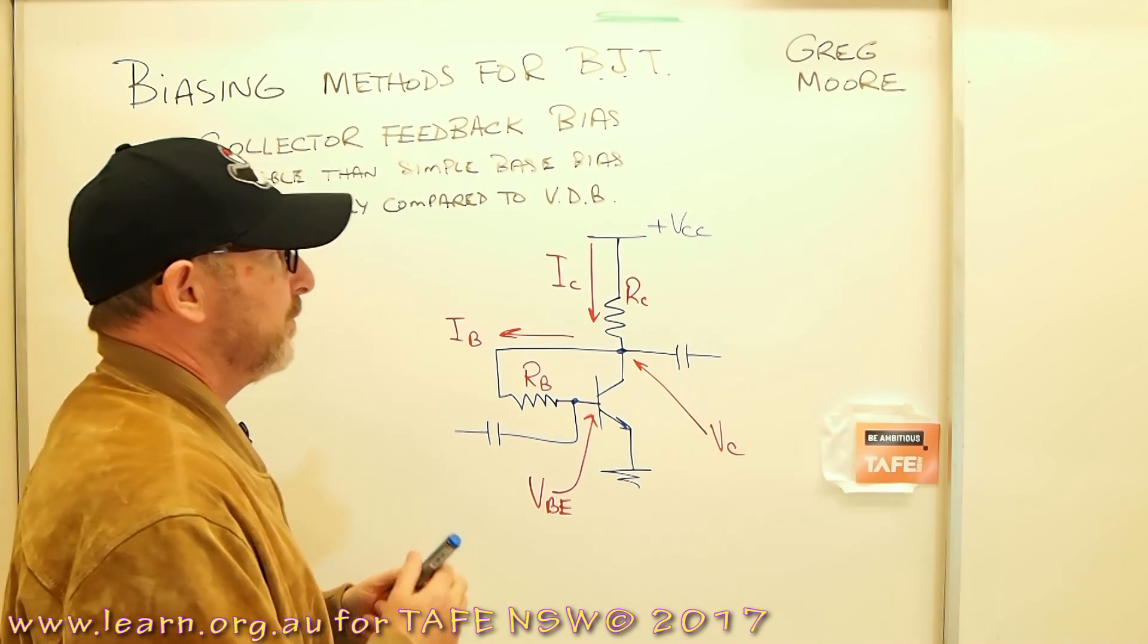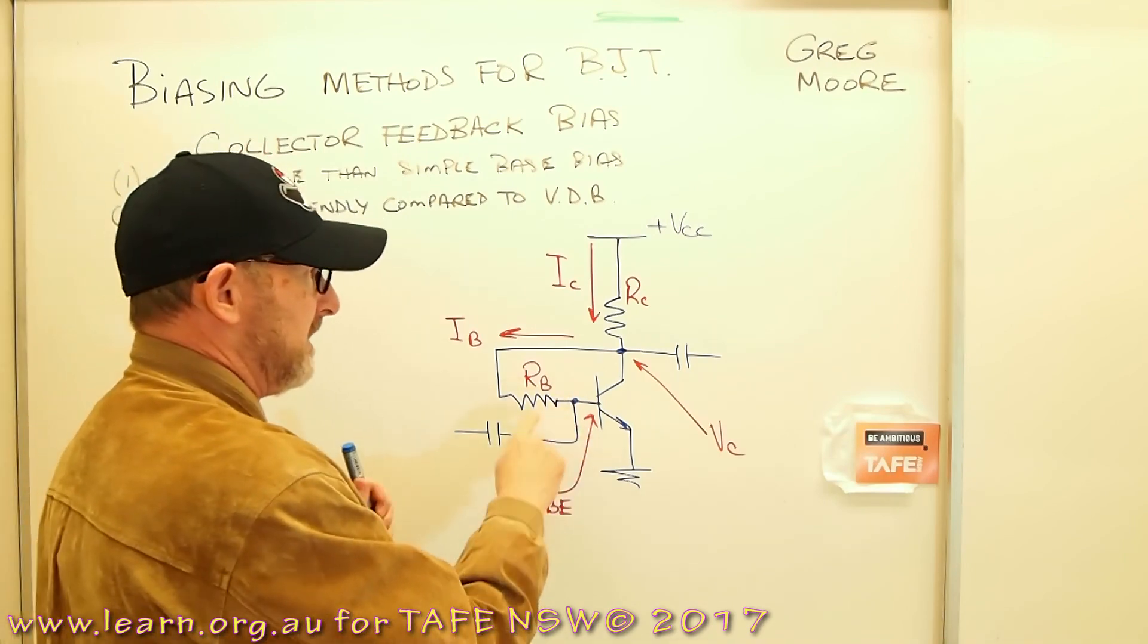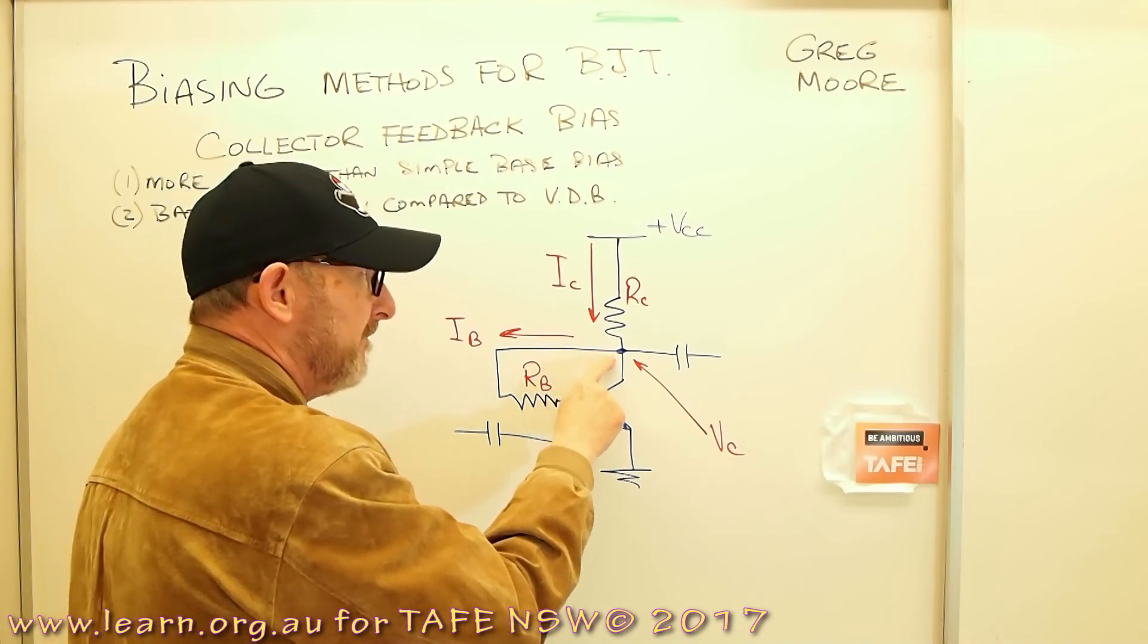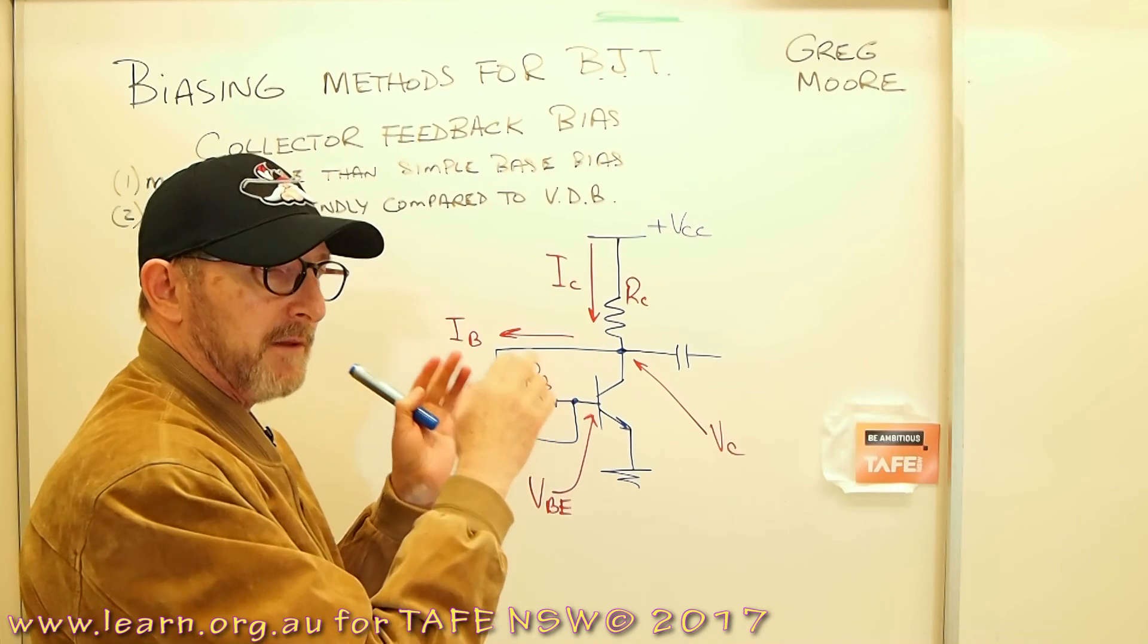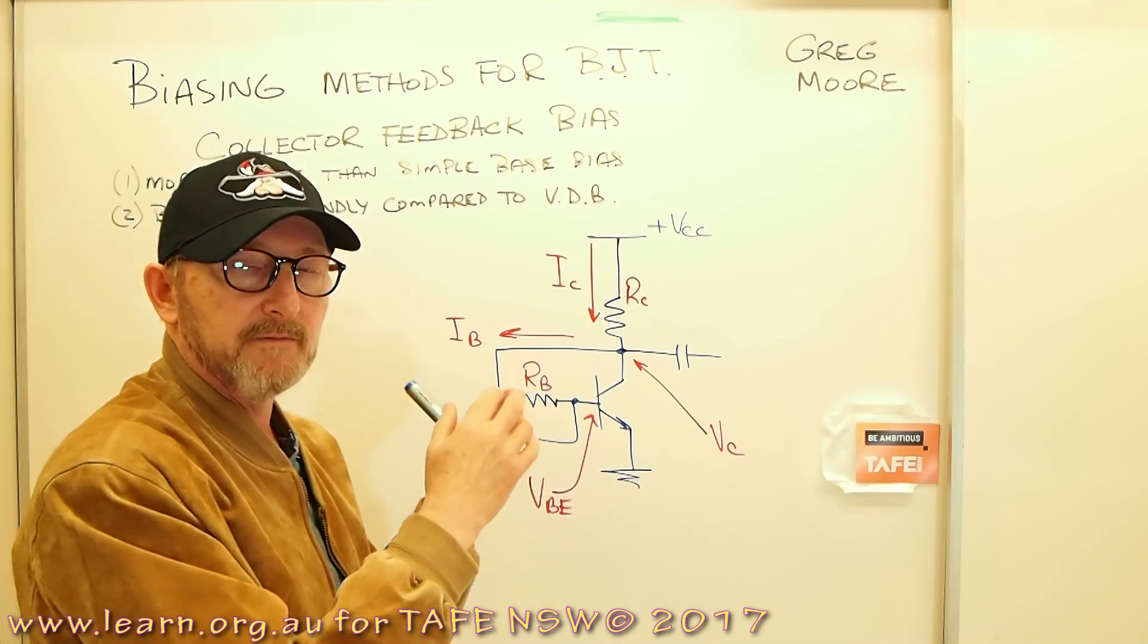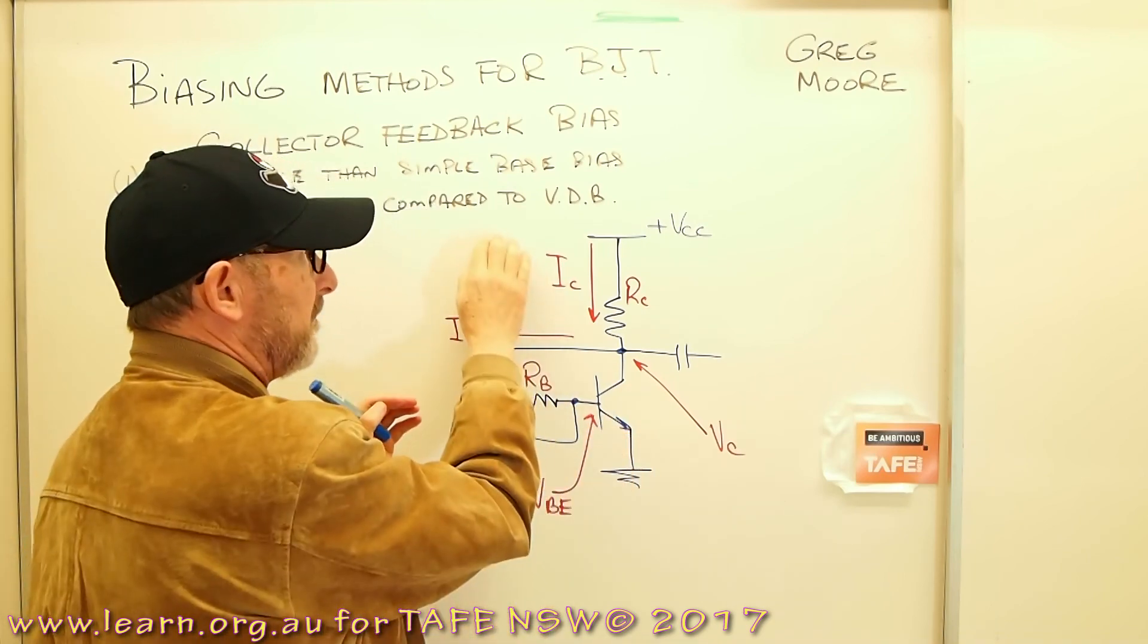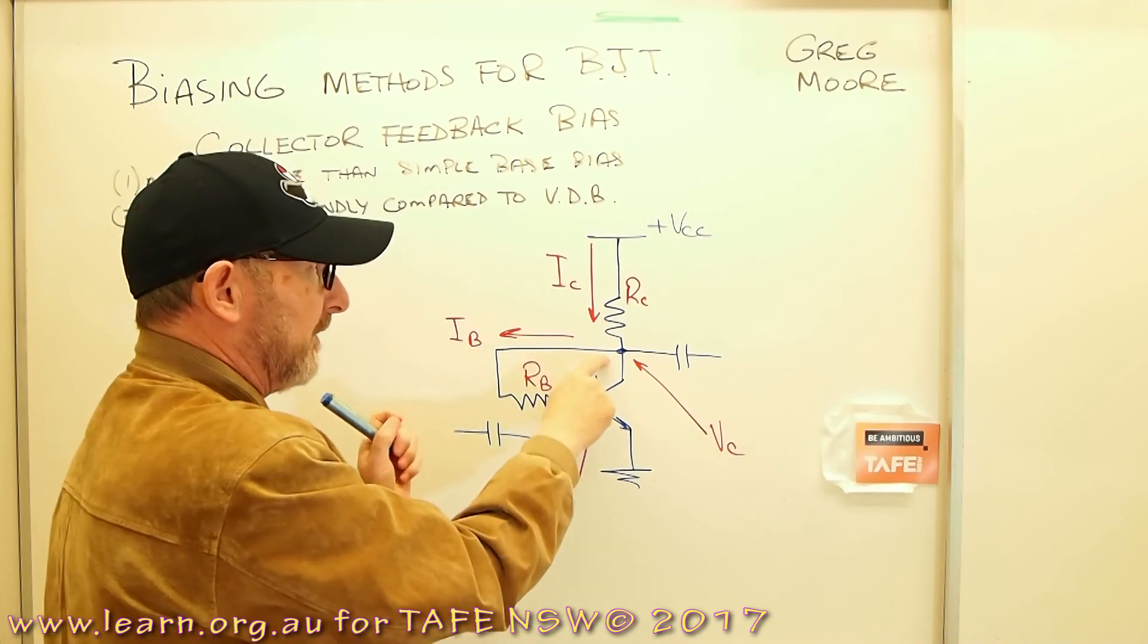How does it work? Well we've taken the VBB supply from VC in this case. Instead of taking the biasing voltage for the base from the rail, we've actually taken it from the collector.